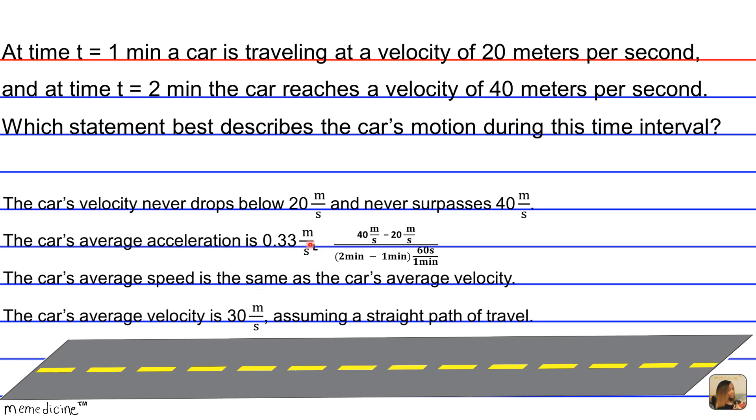So this is quick math. The change in two minutes minus one minute is going to be one minute, so this one minute cancels out, and we're dividing by 60 seconds. You can notice here that the difference between the initial and the final velocity is 20 meters per second.